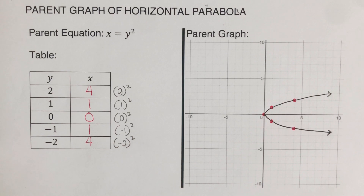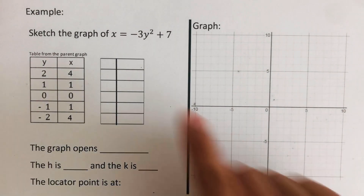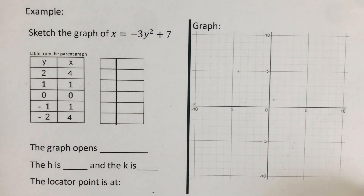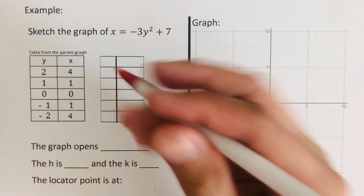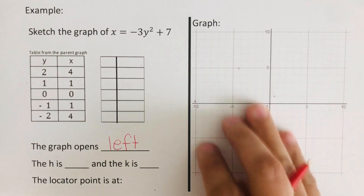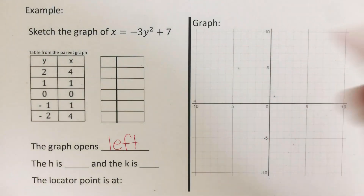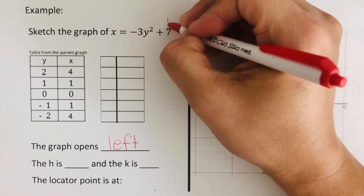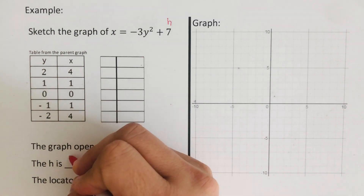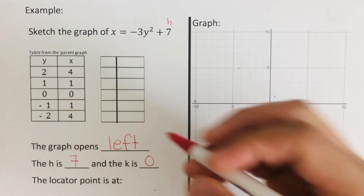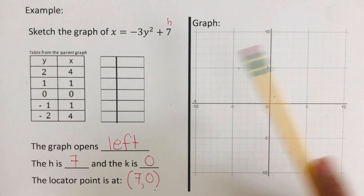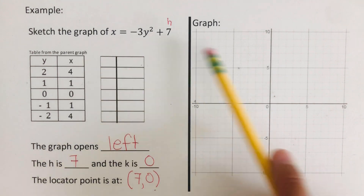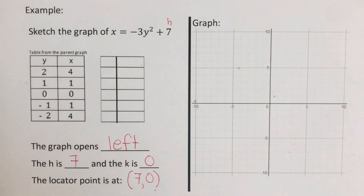Now let's graph a horizontal parabola in graphing form. We need to sketch x equals negative 3y squared plus 7. First, the graph opens left since a is negative. Our h value is positive 7 and our k value is 0, so the vertex or locator point is at (7, 0). Before graphing, let's complete the table of values.